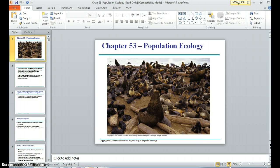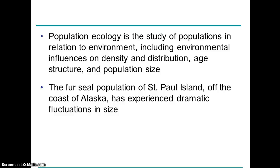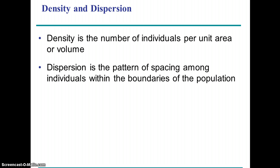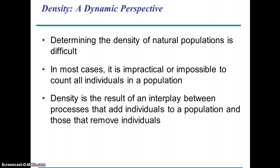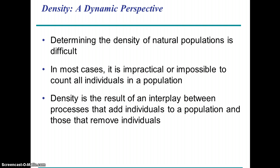Let's talk about chapter 53, population ecology — the ecology of populations. We're focusing on particular species living in pretty much the same area, and we're going to look at all the different parameters that go into studying populations. We can speak of the density of that population, which is the number per unit area, and we can also speak of the dispersion of that species, which is the spacing of them across the landscape.